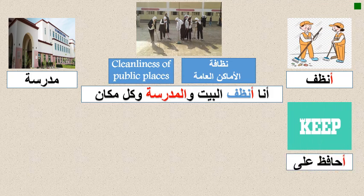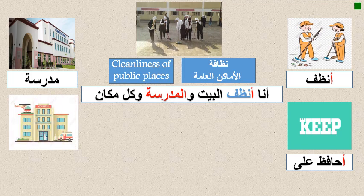Now I have another verb: أحافظ على — meaning 'I keep clean.' For example: أحافظ على نظافة المدرسة — I keep the school clean — أحافظ على نظافة الفصل — my classroom — أحافظ على نظافة ملابسي — my clothes. We should keep everything clean.